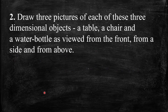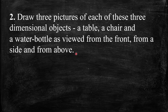Question number 2: Draw three pictures of each of these three-dimensional objects — as viewed from the front, from a side, and from above. The first object is a table, the second one is a chair, and the third one is a water bottle. So we have to draw each object from the front view, from the side view, and from the above view.